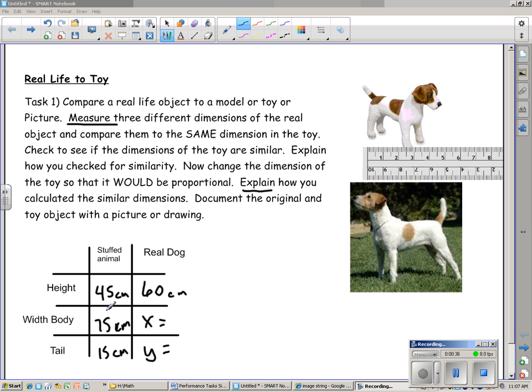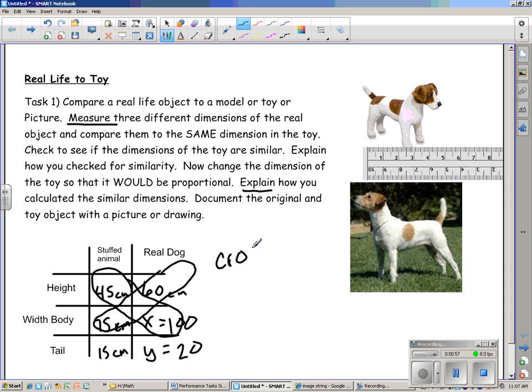Remember, to see if it's proportional—say we knew this was 100 centimeters and this was maybe 20 centimeters—how would you check to see if it's proportional? You could check your cross products, remember that on Excel that we did? What else could you check besides cross products?